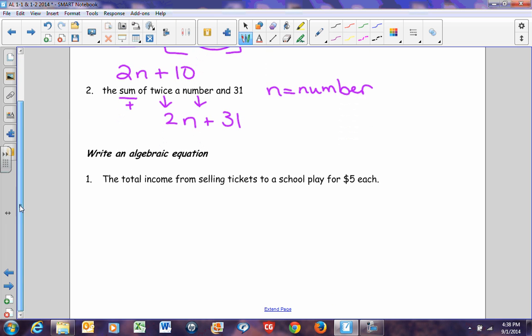Last but not least, we need to write an algebraic equation. An algebraic equation has an equal sign, so we know that it will be slightly different than an algebraic expression. The total income from selling tickets to a school play for $5 each. I actually will have two variables here. One variable will stand for the total income, and the other variable will stand for the number of tickets I sold. Because neither one of these is told to us how much it is. So, I'm just going to let x equal my total income, and I'm going to let t equal my number of tickets.